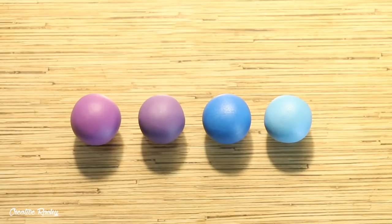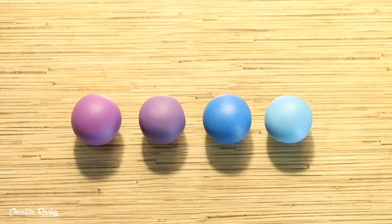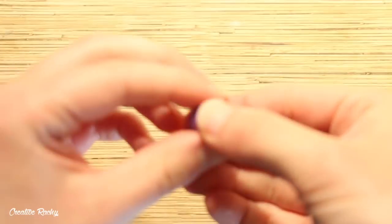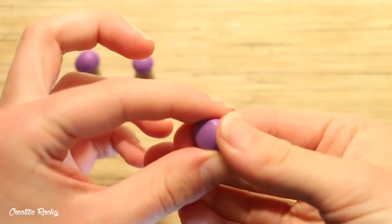For your llama you're going to need purple, a darker purple, dark blue and a lighter blue. Use the regular purple as the base color and make three pieces.